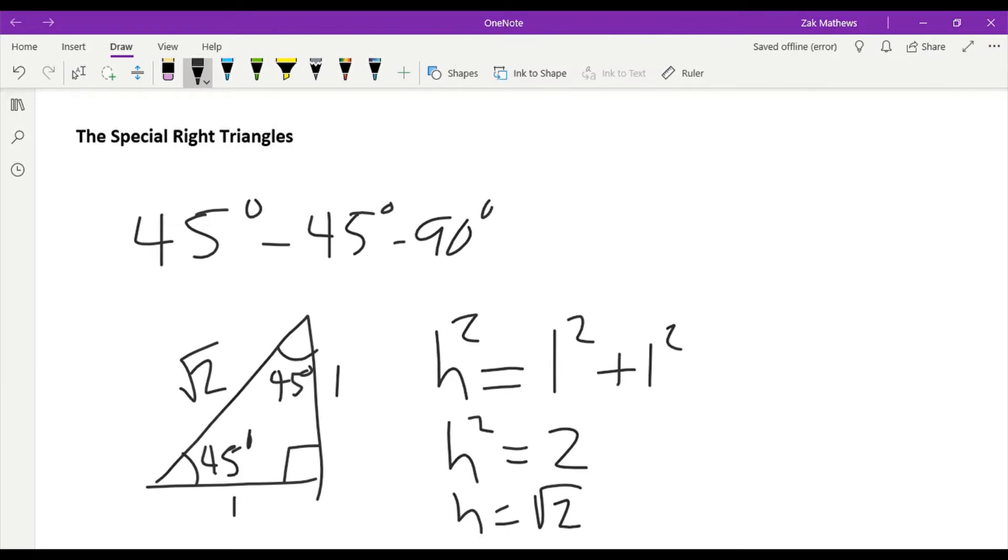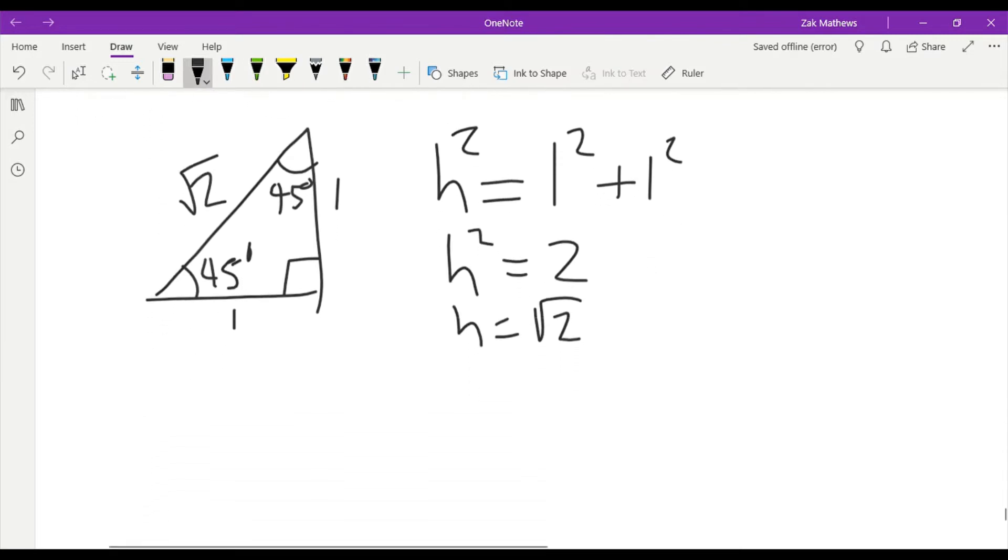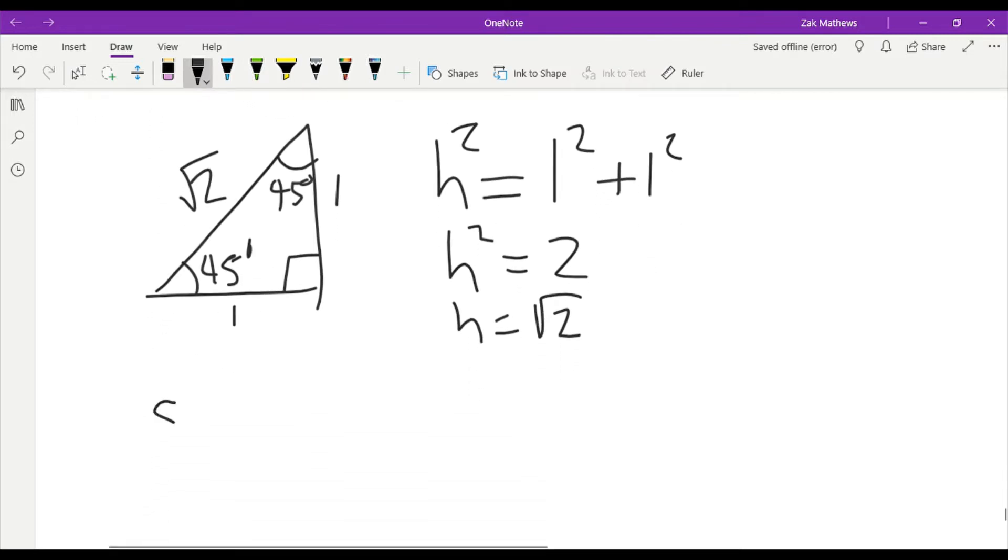So we know exactly how those ratios work. Now the reason these are useful is now that I have this relationship between the sides and the angles for this triangle I can find sine, cosine, tangent and their reciprocal functions exactly. So let's take sine of 45 degrees. Well given the triangle that I've just drawn I know the sine is the opposite over the hypotenuse. So I get one over root two.